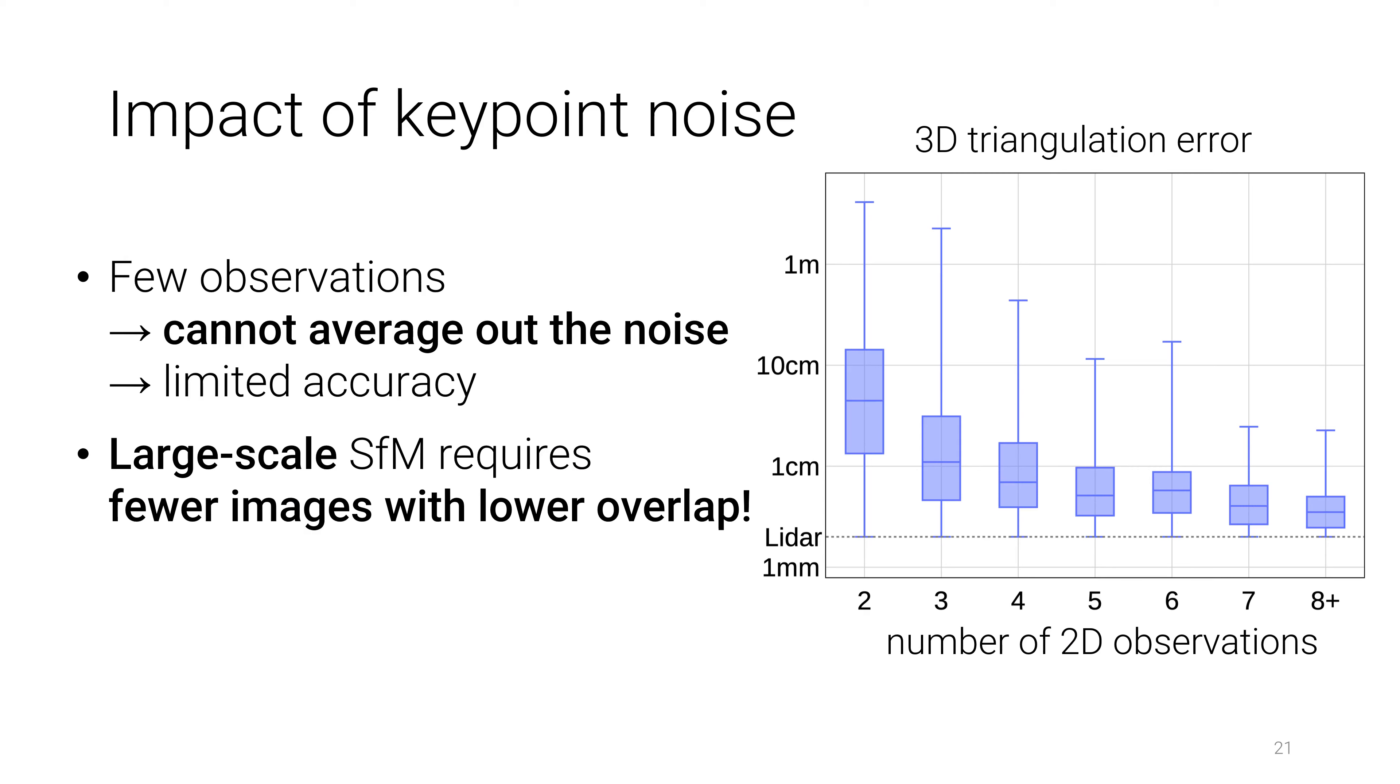By increasing the number of images which observe the same 3D point, this error can be reduced. Though in many cases this is infeasible, since it requires a large view overlap. Scaling SFM to large scenes on the other hand is made easier if view observations are redundant.